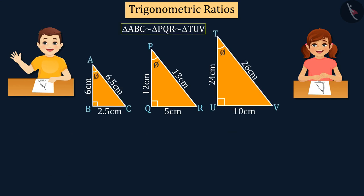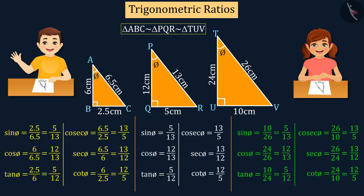Now Raj and Sonam draw one triangle each similar to this triangle PQR. In addition, they also write trigonometric ratios for the angle θ in their respective triangles and find that the value of trigonometric ratios for the angle θ in all three triangles is the same.